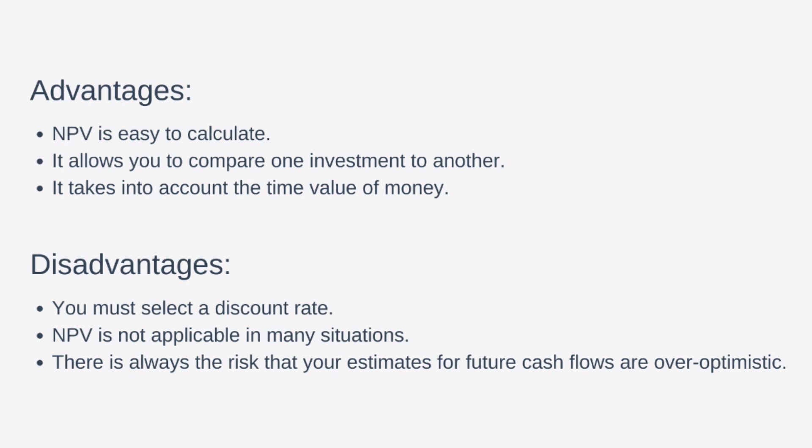NPV is not applicable in many situations, such as startups where it isn't possible to estimate future cash flows. And finally there's always the risk that your estimates for future cash flows are over-optimistic and your project fails to return as much as you estimated. Now some organizations use something called a margin of safety in their NPV calculations to compensate for this. And how that works is, suppose an organization sets a margin of safety of 20%, well in that case they would not authorize an investment unless the NPV value was not only above zero but 20% or more above the initial outlay. This way they give themselves some wiggle room should their estimates not turn out to be as accurate as they hoped.